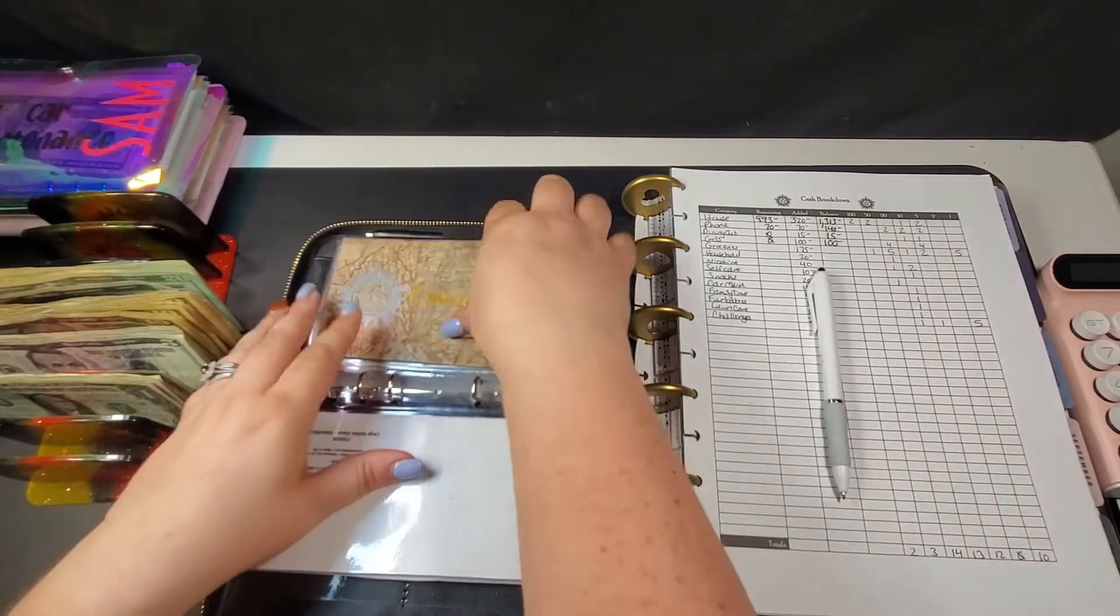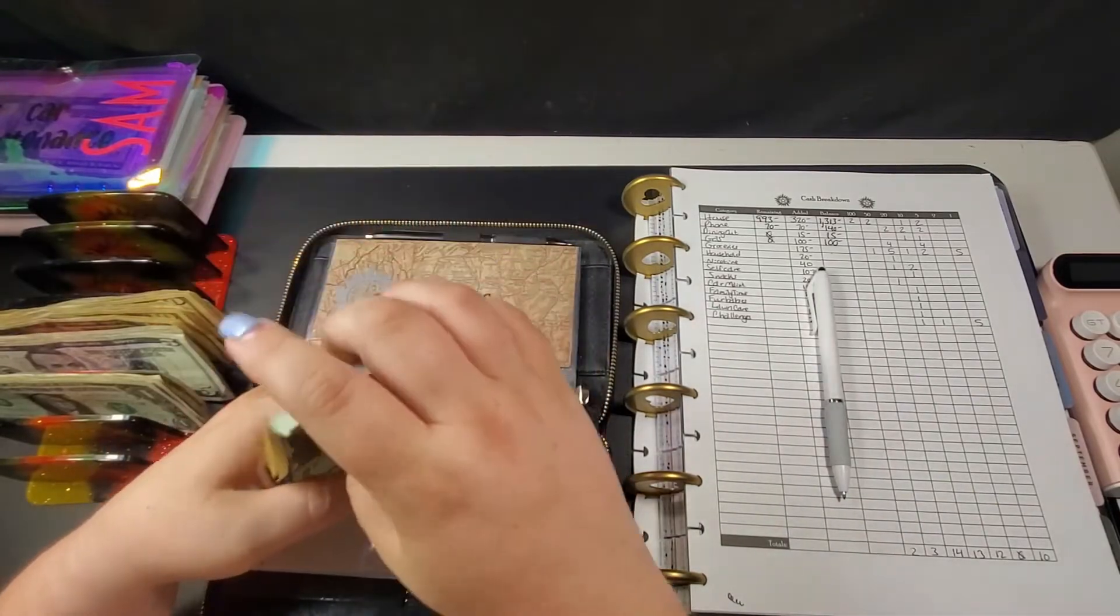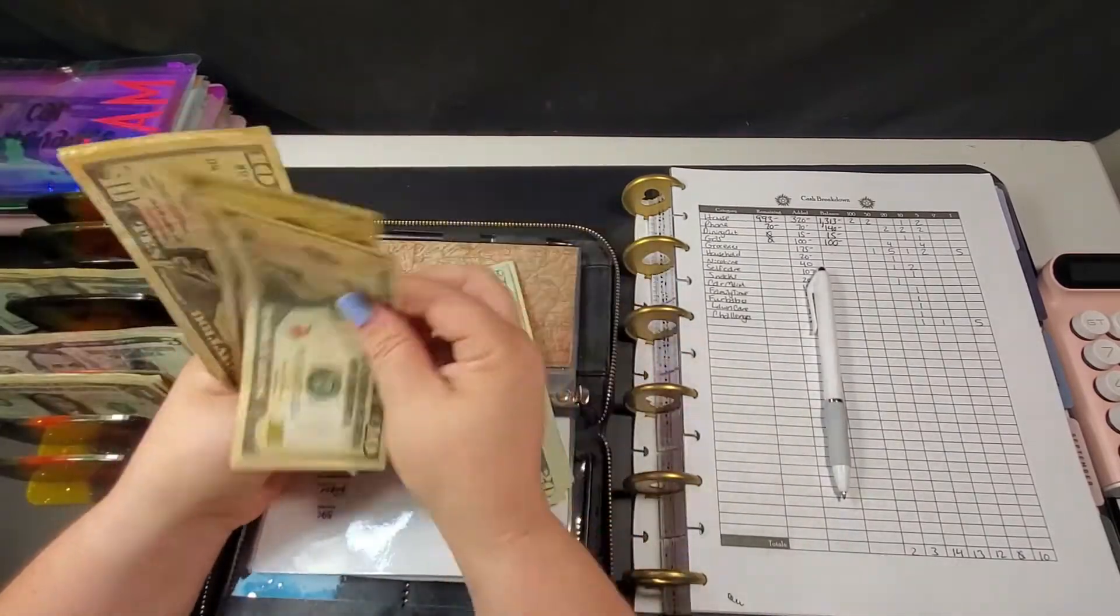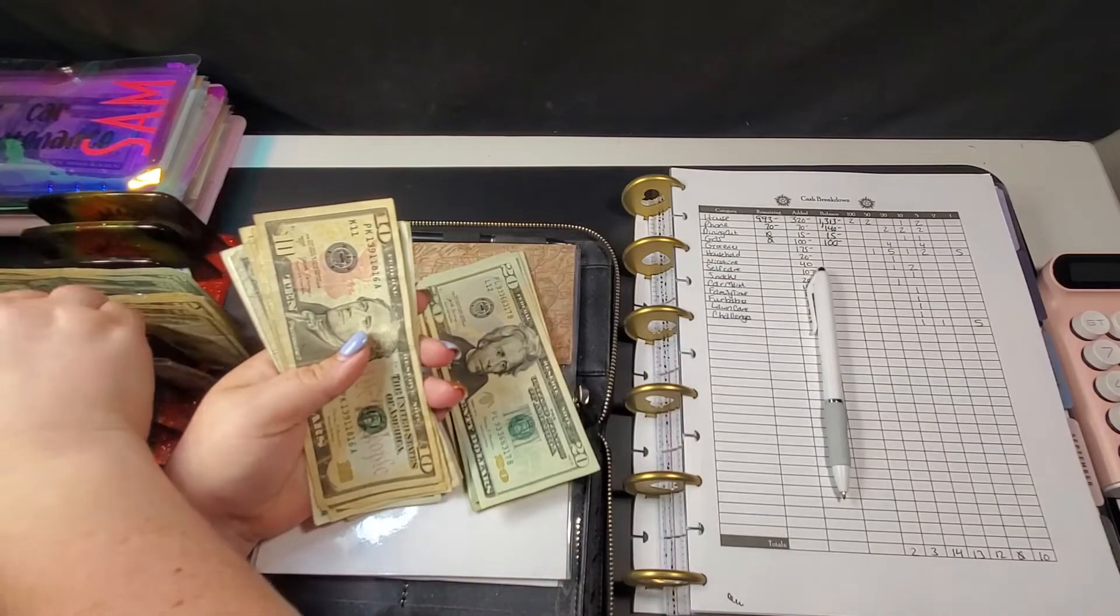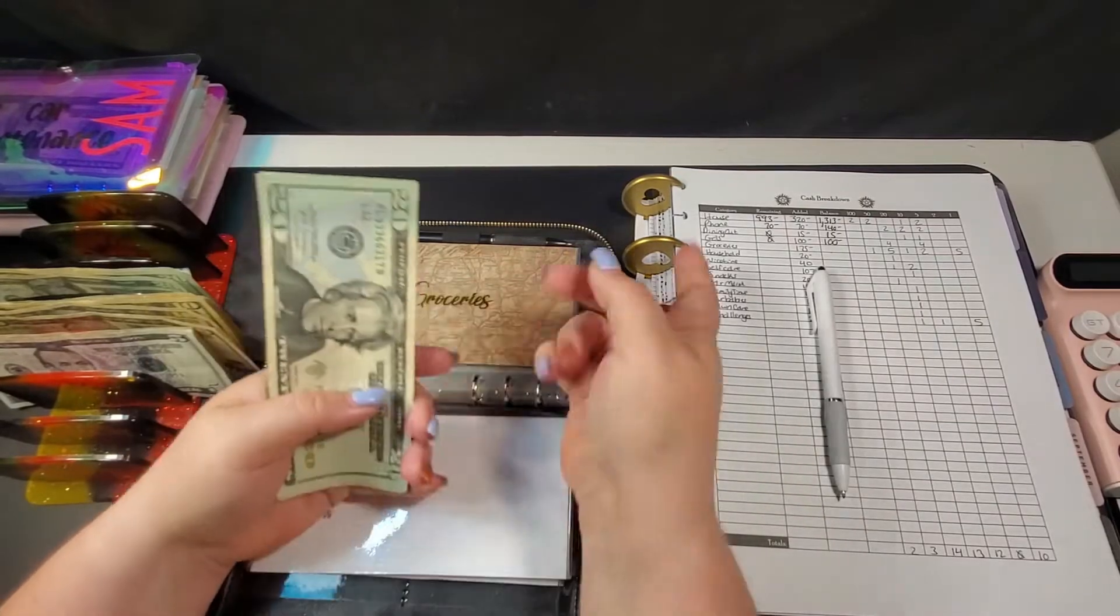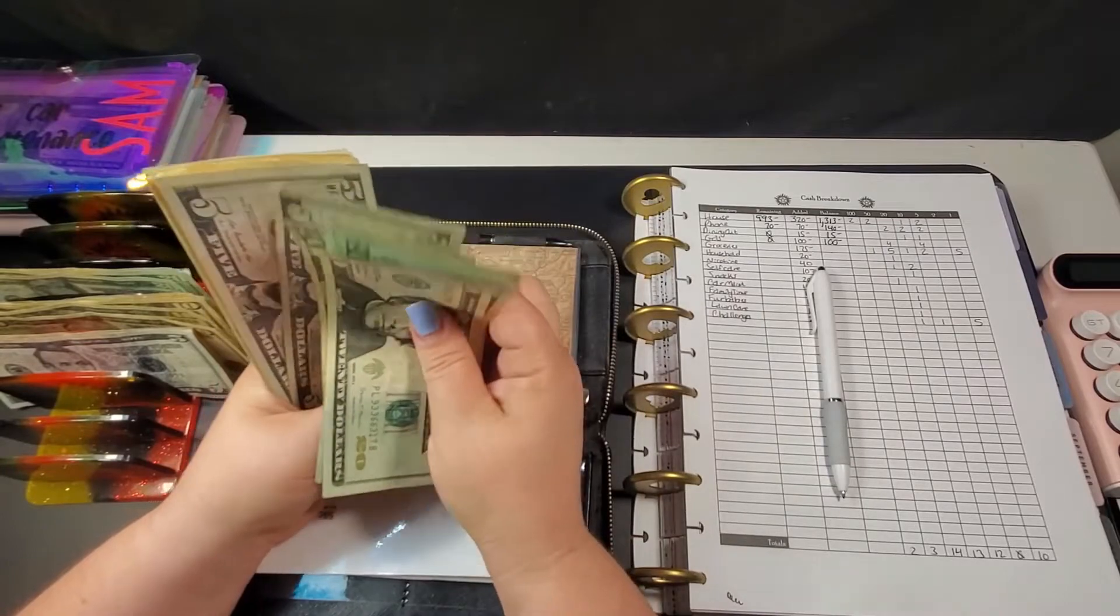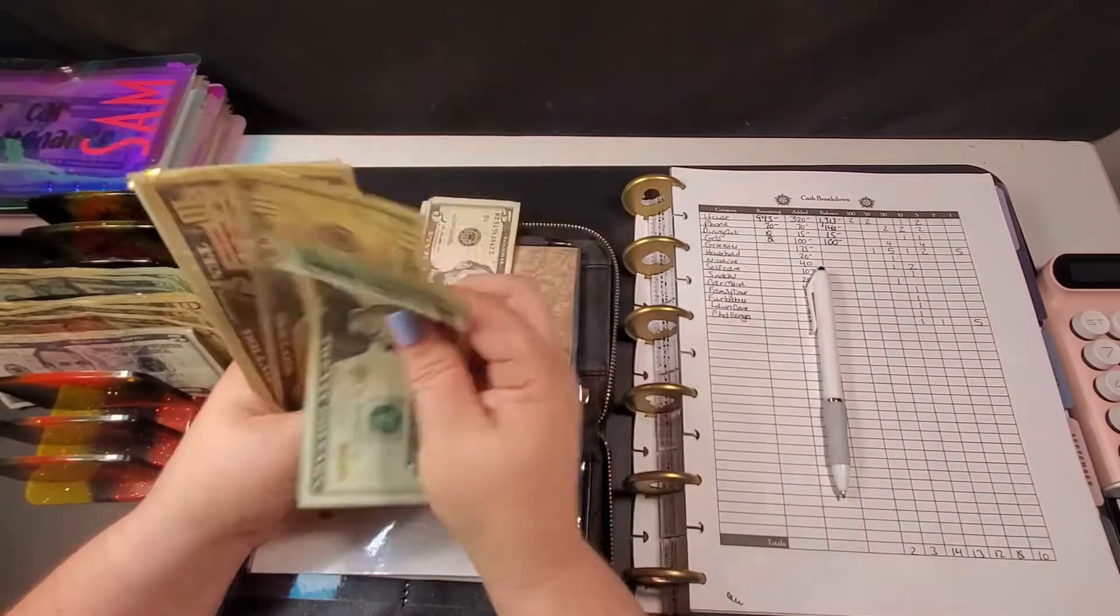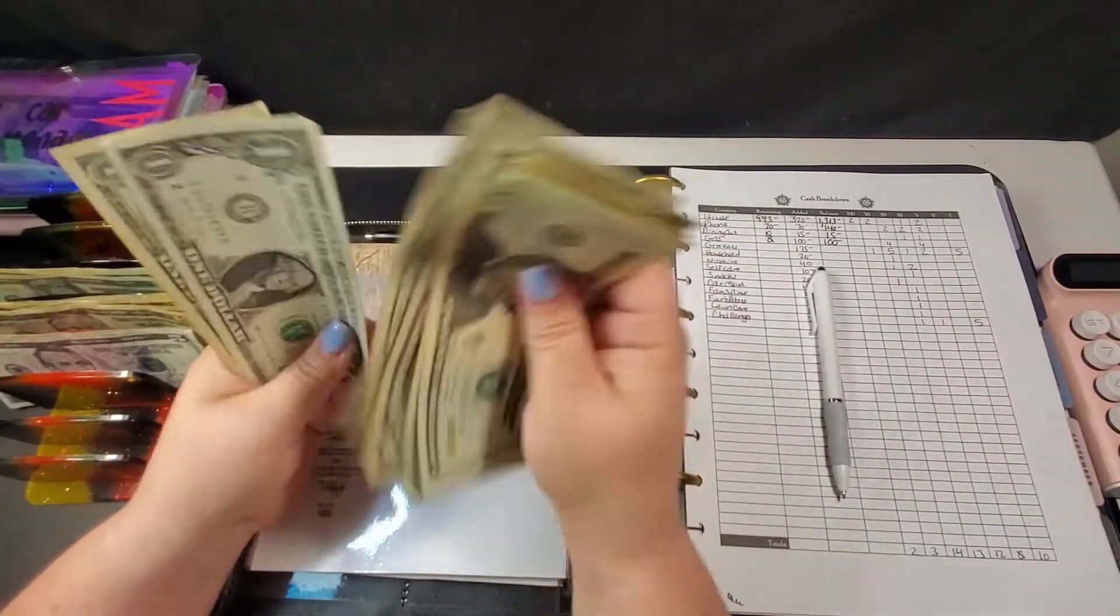And I'm sorry this video is so quick, guys, or maybe you like that, but I just I've got stuff I gotta get done. So groceries gets $175. [Organizing money and counting]